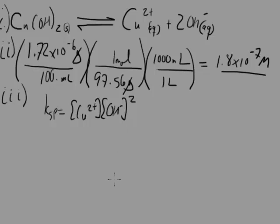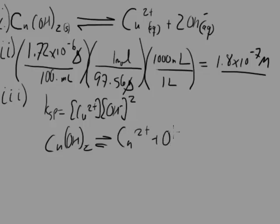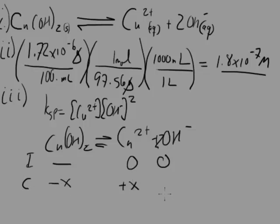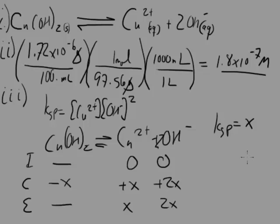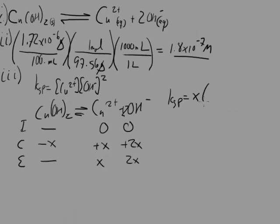A rice chart will help us figure out what those concentrations are under these conditions. Here's copper hydroxide in equilibrium with copper 2 plus and two hydroxide ions. Initial concentration: we don't have any of the products. The change: every mole of copper hydroxide we lose, we gain a mole of copper ion and 2 moles of hydroxide ion. So at equilibrium, we'll have x moles of copper ion and 2x moles of hydroxide ion. Ksp in terms of our chart would be x times 2x quantity squared, because that is the concentration of hydroxide ion.